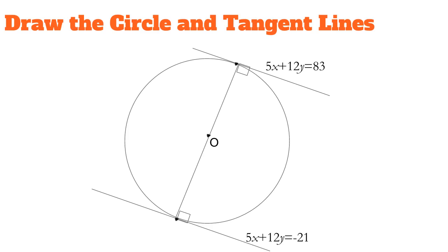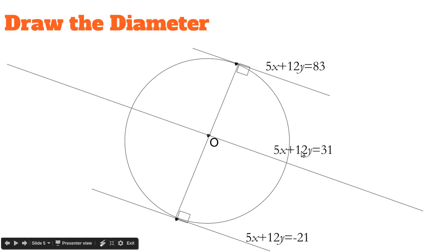The average of 83 and negative 21 is 83 plus negative 21 all over 2, which is 31. So 5x plus 12y equals 31 goes through the center.